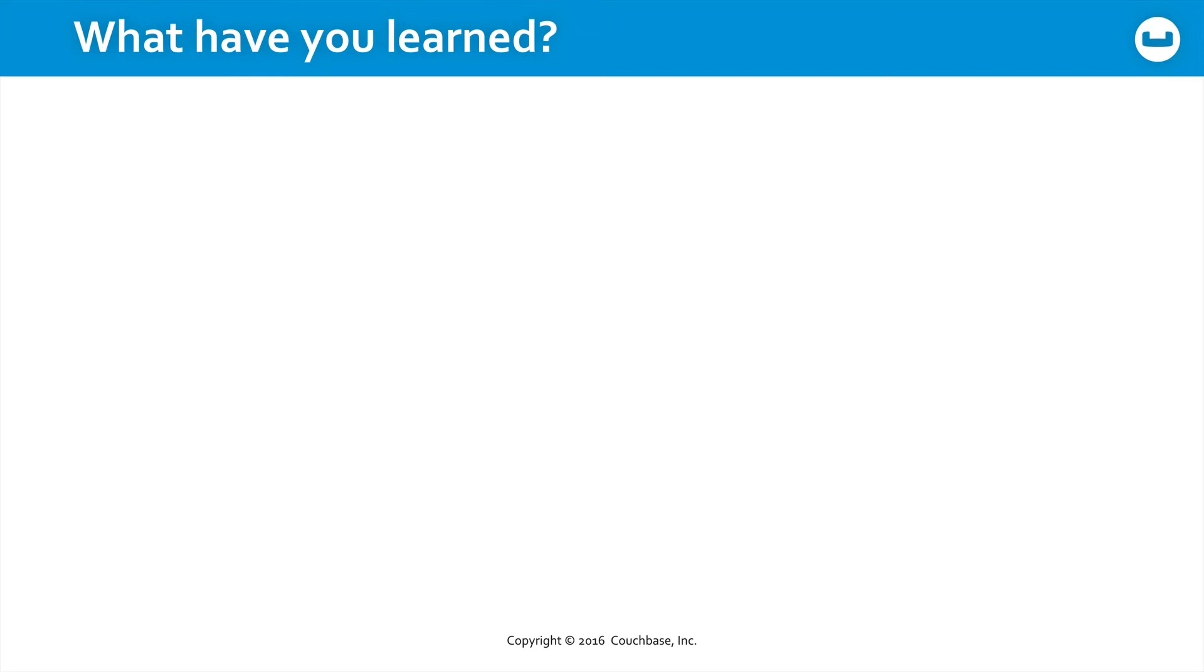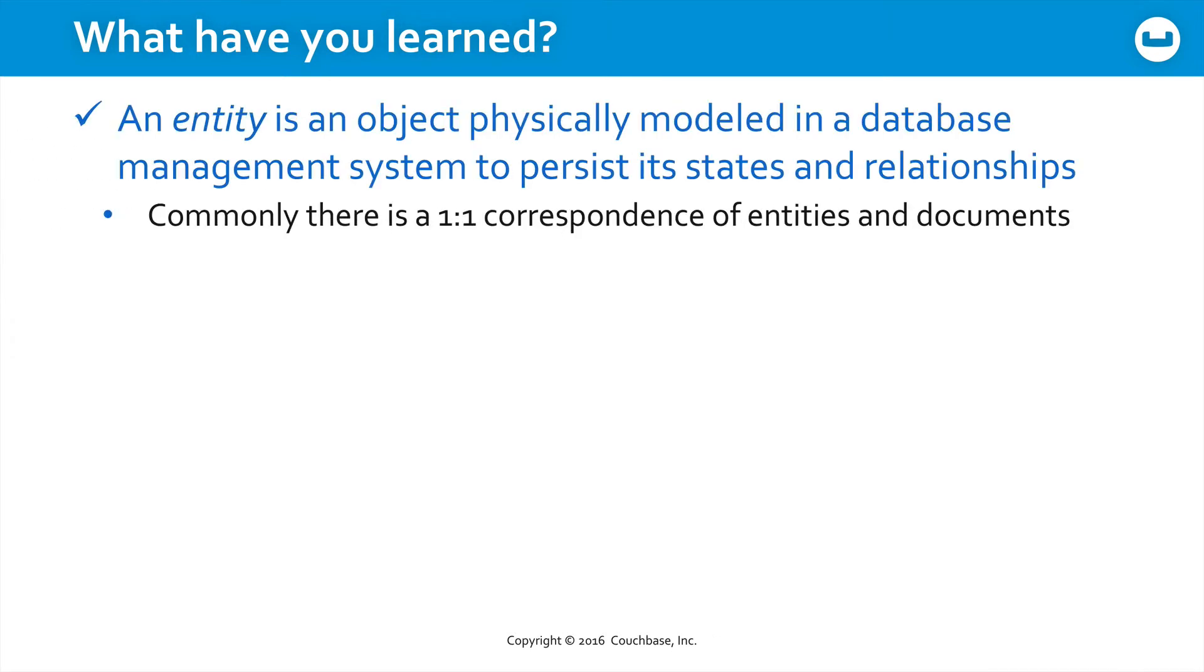So what have you learned in this particular lesson? Well first, an entity is an object that's being physically modeled in a database management system so that you can persist its states and relationships. Commonly in document databases, there's a one-to-one correspondence of your entities and the underlying documents. However, this is not required and it may not be possible in your system, but it's a good idea to keep in mind where possible.